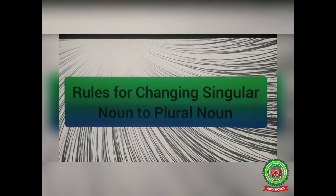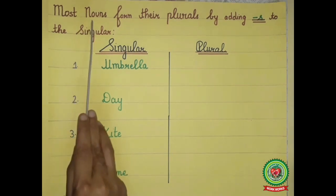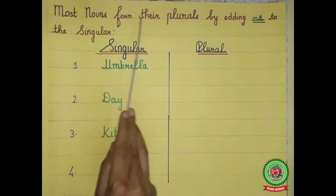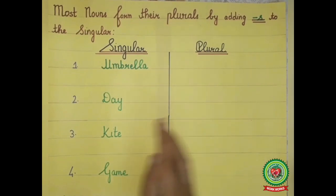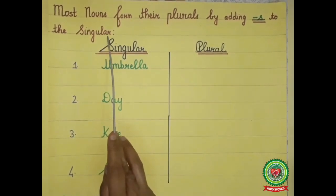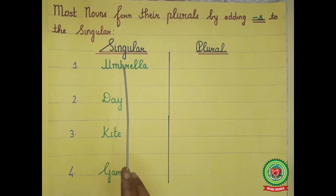Now I will discuss the different rules for changing singular nouns to plural nouns. Rule number one: most nouns form their plurals by adding 's' to the singular.